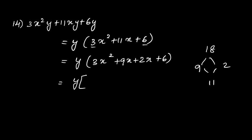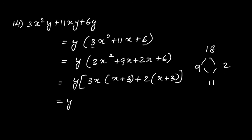Write y. From the two terms 3x²+9x, take 3x as common to get 3x(x+3). From the next two terms, take 2 as common to get 2(x+3).